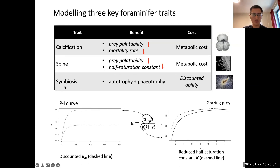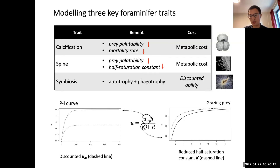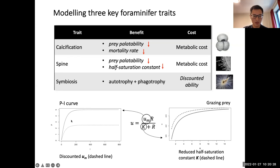The last trait is symbiosis. The benefit is an enhanced photosynthesis rate. The cost is assumed to be discounted grazing ability — for example, we reduce the maximum photosynthesis rate to reduce photosynthesis efficiency for the host.